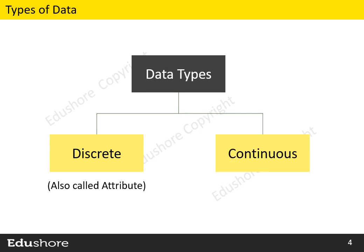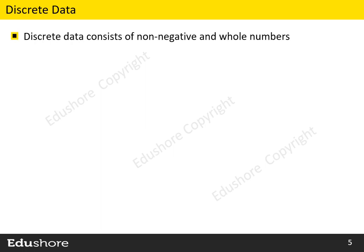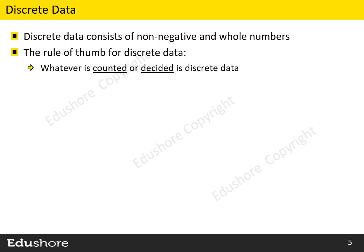Discrete data is also called attribute data, and continuous data is also called variable data. Discrete data consists of non-negative whole numbers. The rule of thumb for discrete data is this: whatever is counted or decided is discrete data.